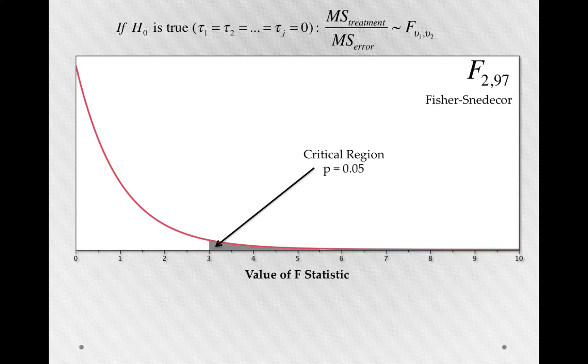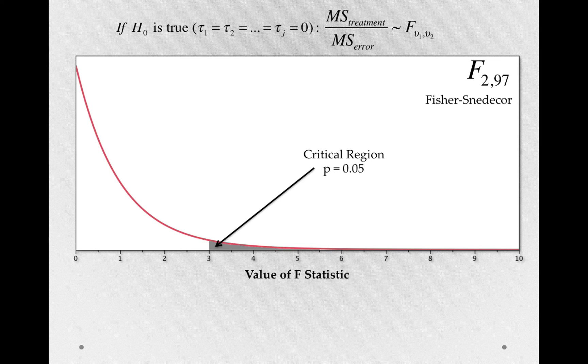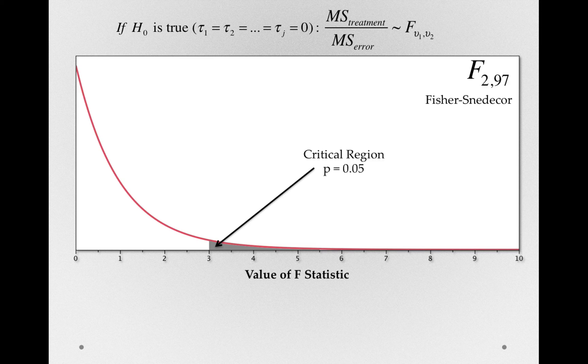We simply do our study, calculate these terms, and find our observed value of F. If our observed value of F is in the critical region, yields a p-value less than alpha, in this case, let's say less than 0.05, we can reject the null hypothesis.